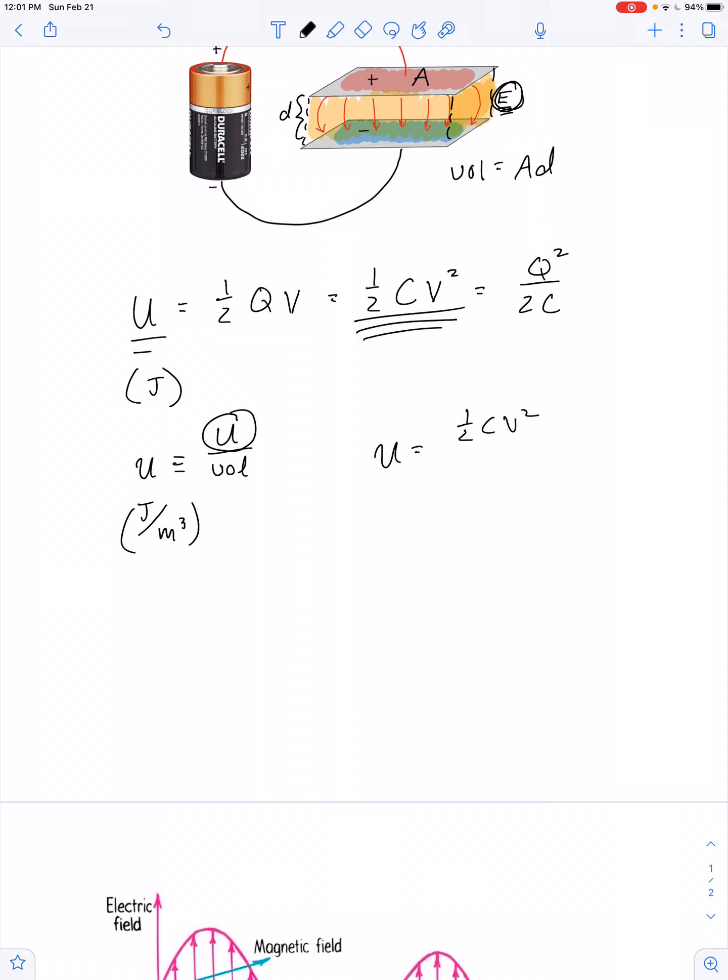And then in place of the volume, we'll say it's a times d. Now, capacitance for this type of capacitor, a parallel plate capacitor, is epsilon naught times a over d, and we can say the voltage is equal to e times d.